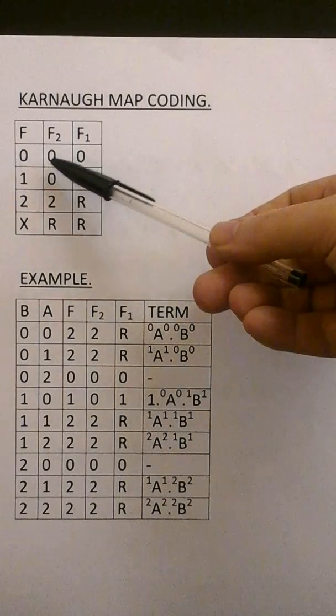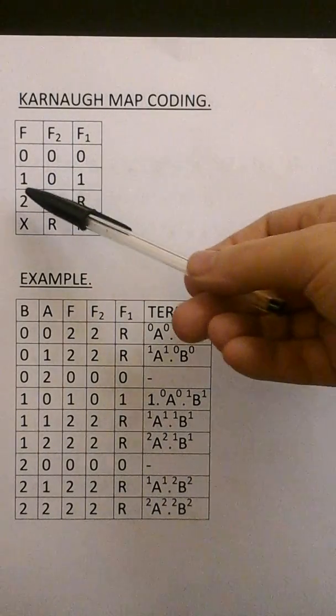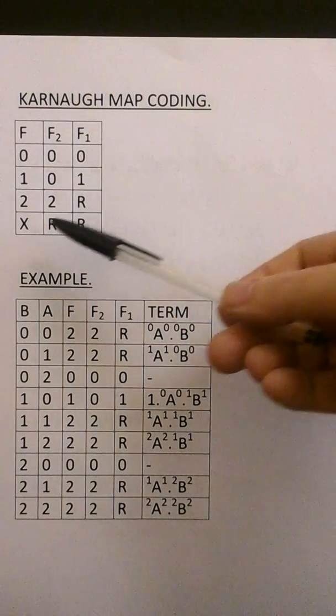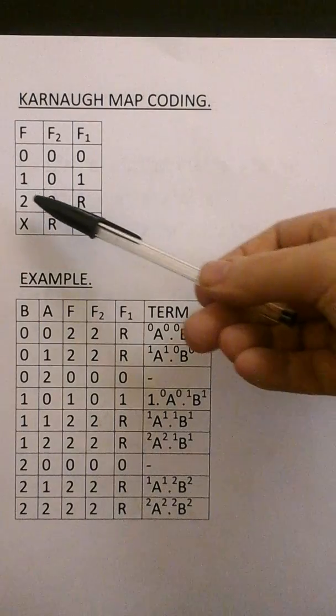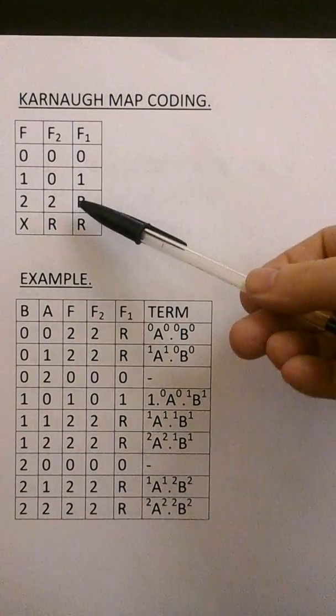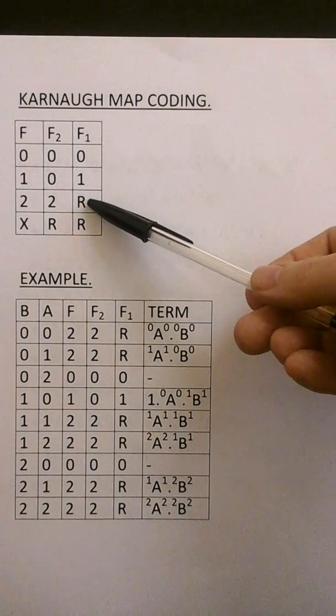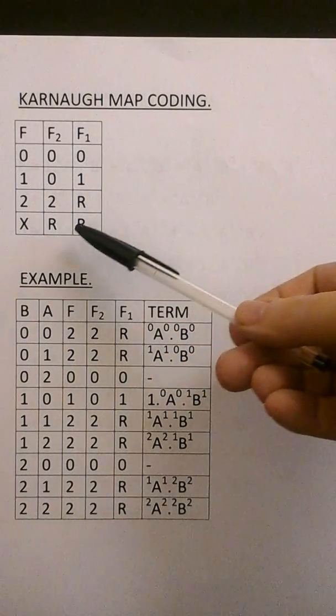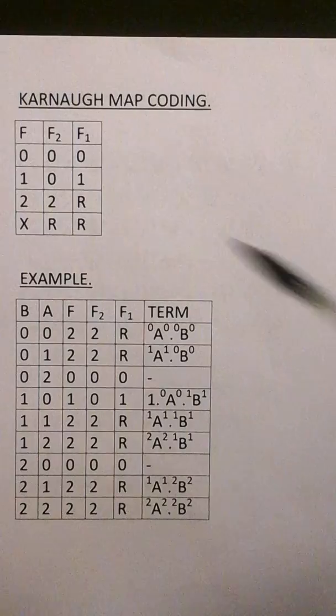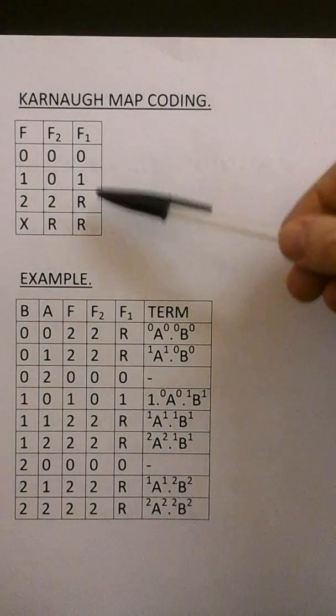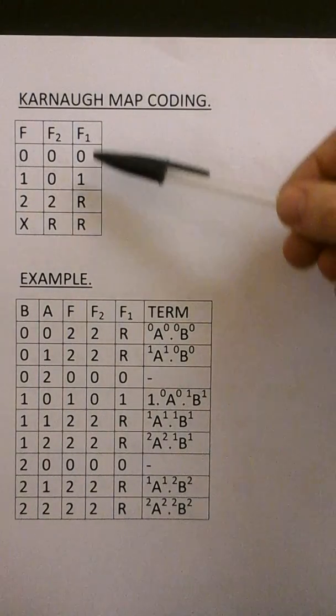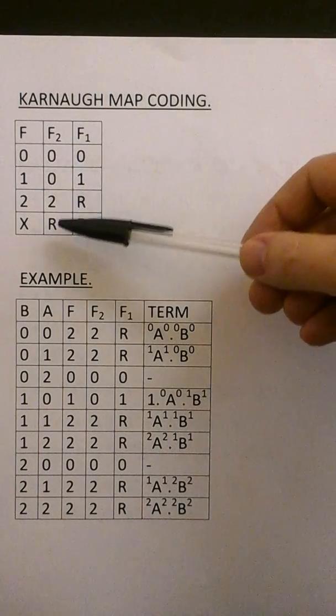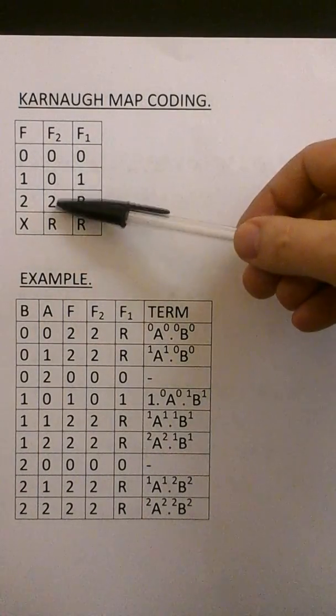If F is a 0, F2 equals 0 and F1 equals 0. F is a 1, F2 equals 0 and F1 equals 1. If F is a don't-care state, both F1 and F2 are redundant states. The value of R in F1 can assume the value of either 0 or 1. The value of R in F2 can assume the value of either 0 or 2.